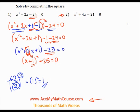So, what I need to do now is just add 25 to both sides of the equation. Okay. So, you end up with x plus 1 squared equals 25.